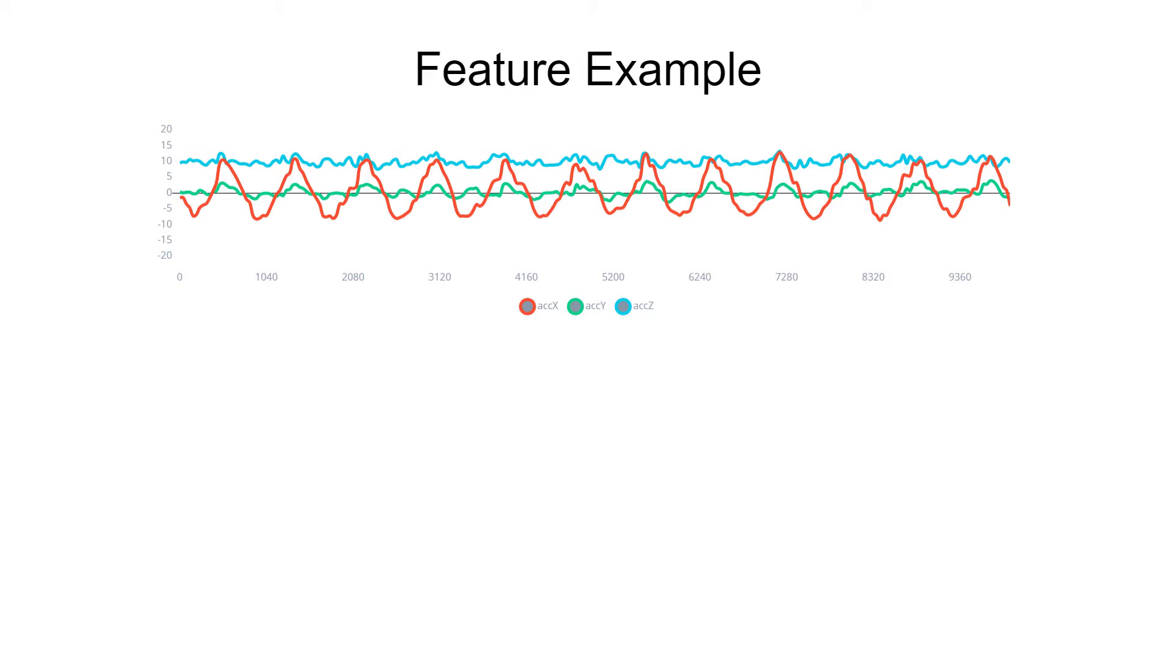Now, let's start by looking at a very simple example of a feature set. We'll take a single point in time and look at the X, Y, and Z acceleration data at that point.